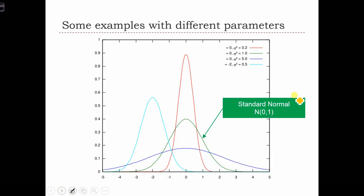The green curve is what we call the standard normal probability distribution function. It's a normal distribution where mu equals 0 and sigma squared equals 1.